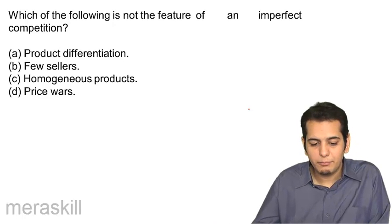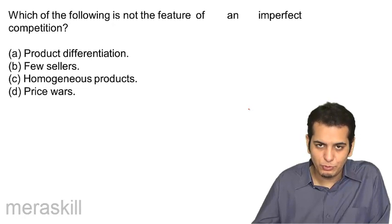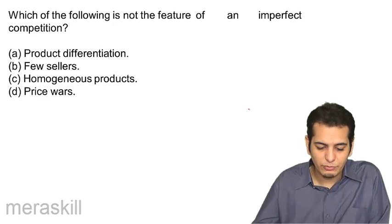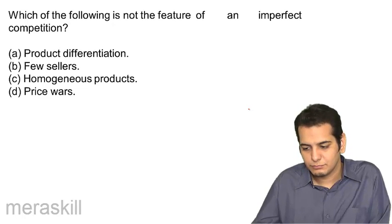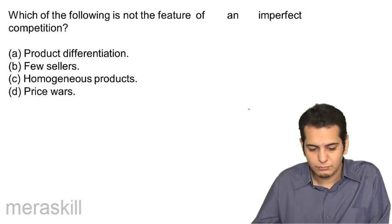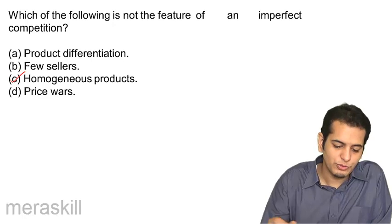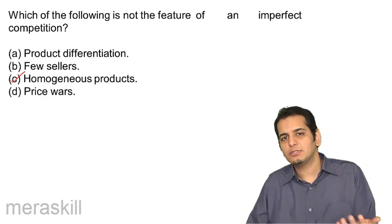Next, which of the following is not a feature of imperfect competition? A. Product differentiation. B. Few sellers. C. Homogeneous products. The answer is C — homogeneous products. You don't have homogeneous products in imperfect competition. Imperfect competition is a competition which is not perfect. Let's check. That's the answer.